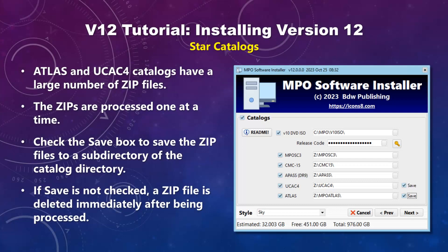The Atlas and UCAC4 catalogs require downloading a number of zip files; each one is downloaded, extracted, and processed before going on. Given the time it takes to download the zip files, you have the option to save them instead of having them deleted from the temporary download directory. If you check the save box, the zip files are automatically saved to an auto-created subdirectory under the catalogs directory.